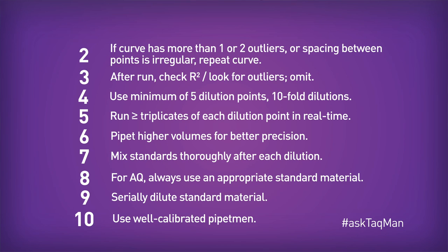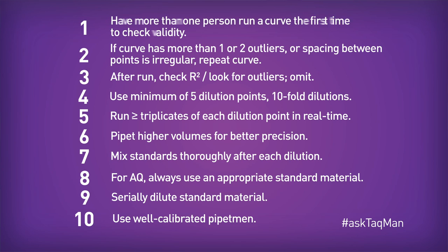Number 2: if the curve has more than one or two outliers, or if the spacing between any of your points is irregular, repeat the entire curve, including doing the dilution. And number 1: have more than one person run a curve the first time to make sure that the results are in agreement.